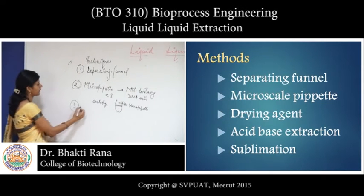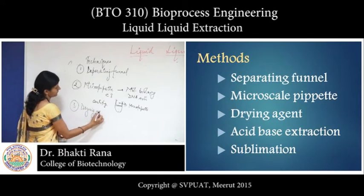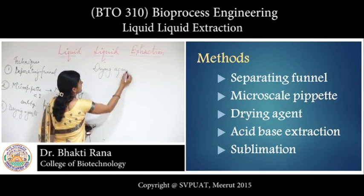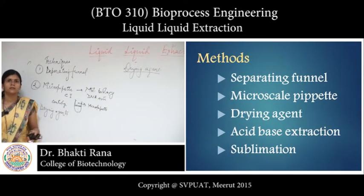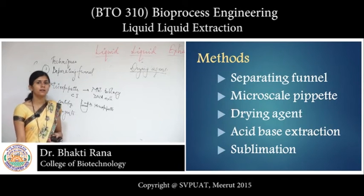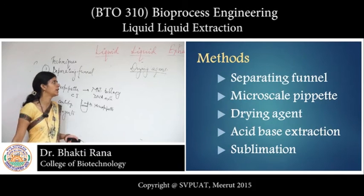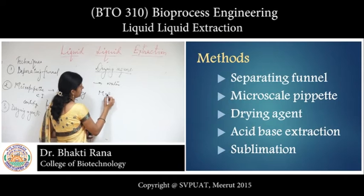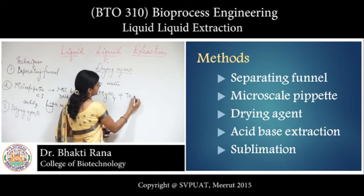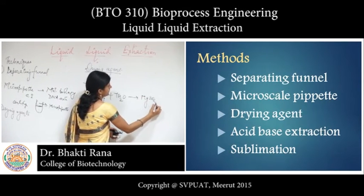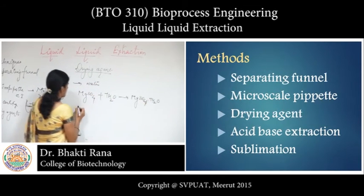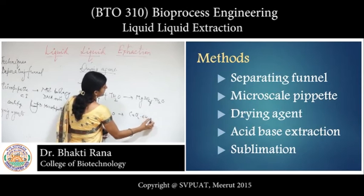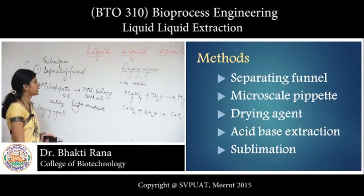The third technique is using drying agents. If you have two solvents or two components that are not completely miscible with each other, some water may remain and you have to remove it. A drying agent is used to remove water. For example, you may use MgSO4, which will absorb seven molecules of water. You can also use CaCl2, which will absorb six molecules of water. Different drying agents can be used to absorb water and obtain the desired liquid.